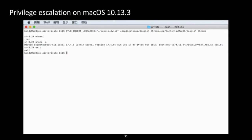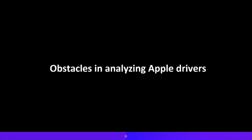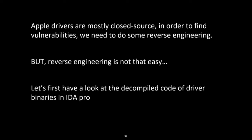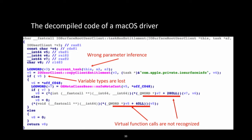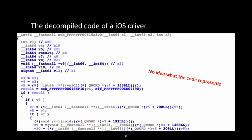Thanks. Next, we are going to show how we find those vulnerabilities. Apple drivers are mostly closed source, so in order to find vulnerabilities we need to do some reverse engineering. Looking at the decompiled code of driver binaries in IDA Pro, on macOS function names are kept but there are problems such as wrong parameter inference, lost variable types, and unknown virtual function calls. On iOS, the situation is even worse — the decompiled code is essentially a mess with no meaningful symbols.